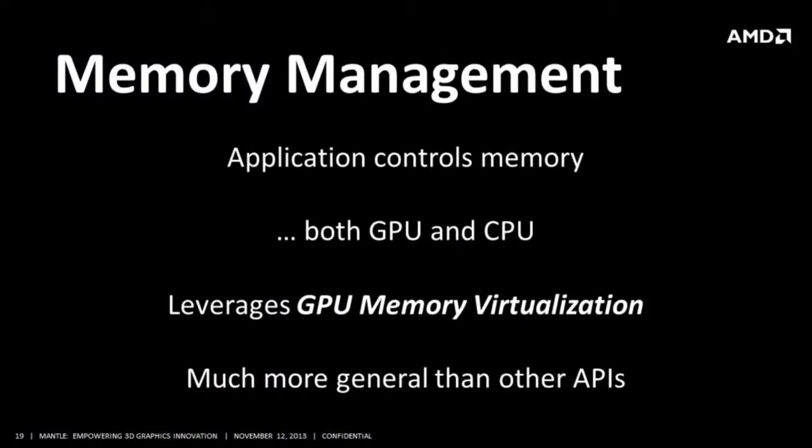In Mantle we've broken that relationship. Instead, you create an object that is just a CPU-side description, and GPU memory is separate — the application allocates memory and binds it. Your application actually manages almost all the GPU memory. The way it works: you create your object, then query the driver for how much memory you need and which heaps it should be in, then bind memory to it. This opens up a lot of possibilities — you can allocate one memory object and sub-allocate a bunch of little buffers from it, or reuse memory to back scratch images, giving you a smaller memory footprint.